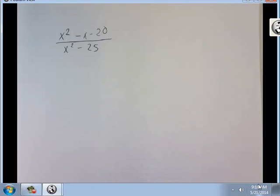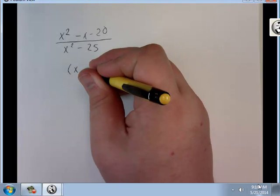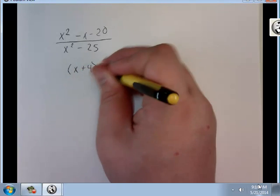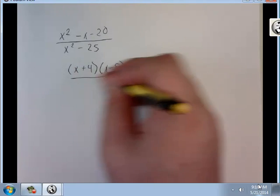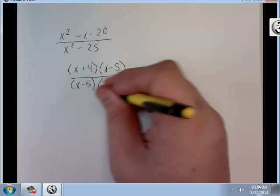Factor both top and bottom. And I'll have x plus 4 times x minus 5 over x minus 5 times x plus 5. Alright.